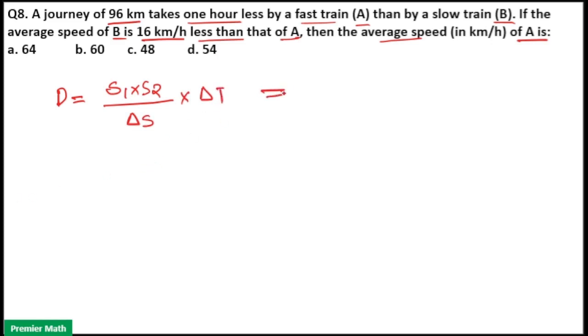Here, distance is 96 km and that is equal to speed of A. Speed of A is, if I take speed of A as X, then speed of B will be X minus 16, because difference between speed of A and B is 16 km per hour.